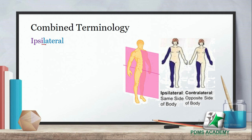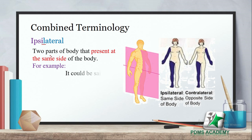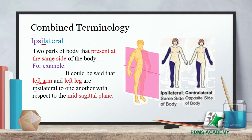اگلی terminology ہے ipsilateral۔ Mid sagittal plane ایک ایسا plane ہوتا ہے جو body کو دو equal right اور left parts میں divide کرتا ہے۔ دو body کے parts جو same side پہ ہوں — for example left arm اور left leg — ان کو ہم ipsilateral کہتے ہیں: left arm and left leg are ipsilateral to one another۔